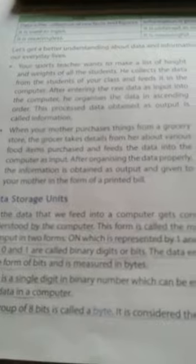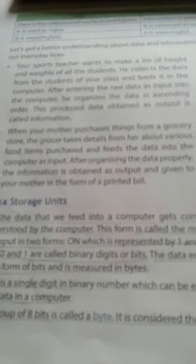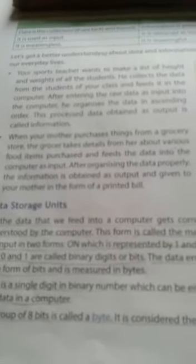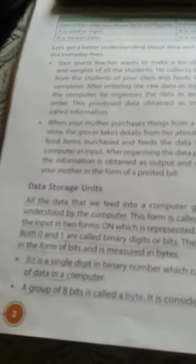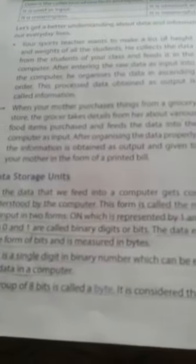A bit is the smallest unit of data and is a single digit in binary, which can either be zero or one. A group of eight bits — zeros and ones combined in different forms — forms a byte, which is considered the smallest unit of memory.